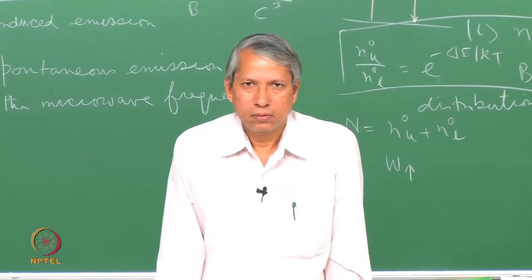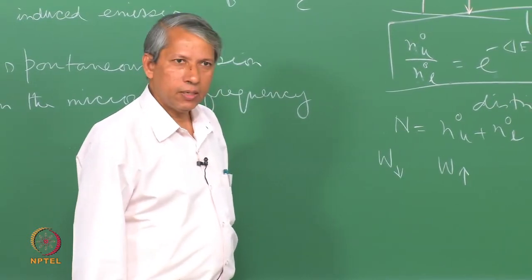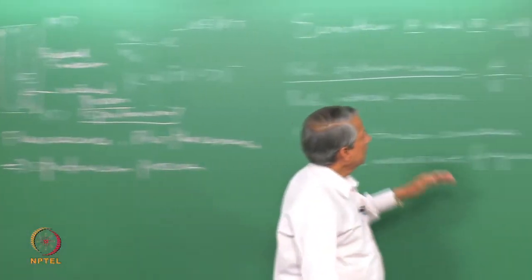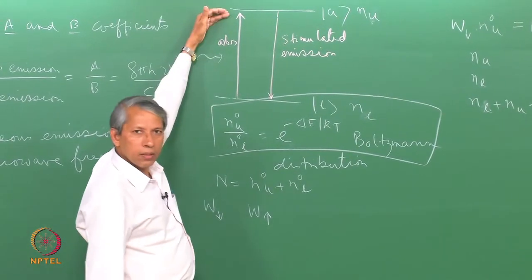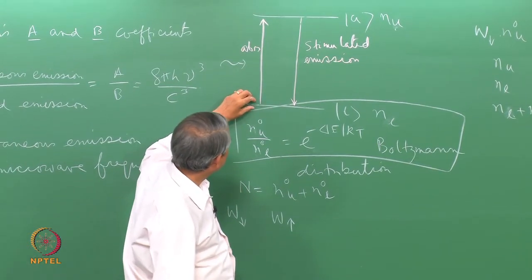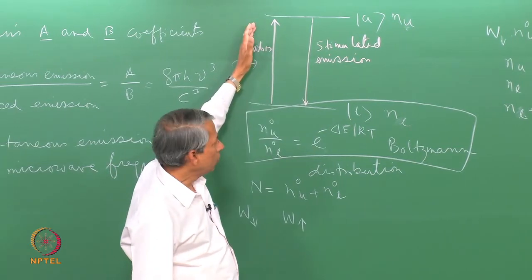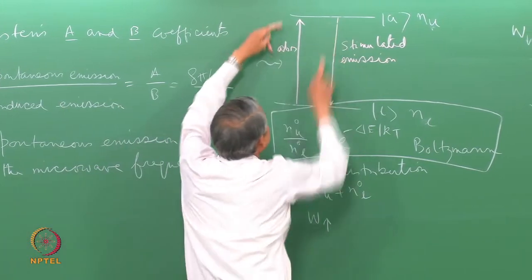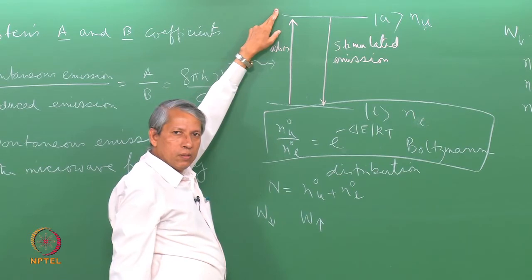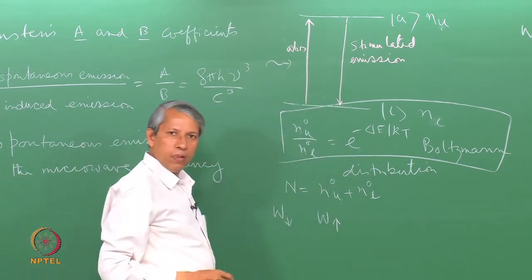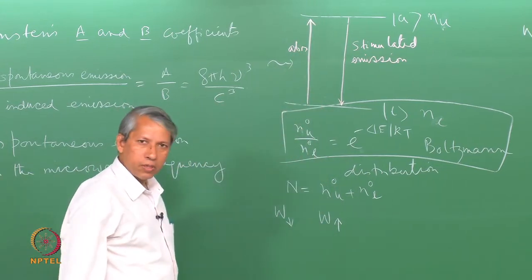To appreciate why relaxation processes are needed, consider the situation where only absorption and stimulated emission are taking place. The radiation will push molecules from lower to upper and also from upper to lower. Initially, since there are slightly more particles in the lower level, the rate of upward transition will be greater than the rate of downward transition. So very soon these two levels will get equally populated and we will not see any net absorption of radiation — no absorption spectrum.